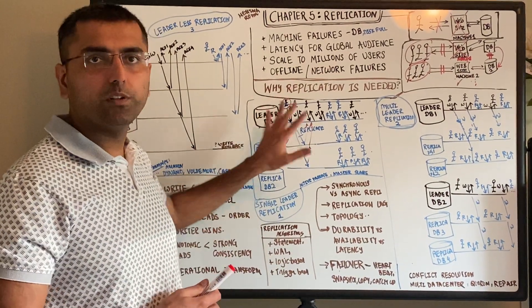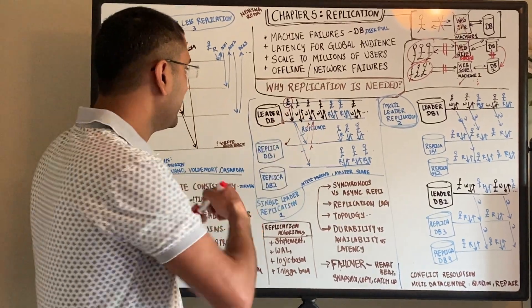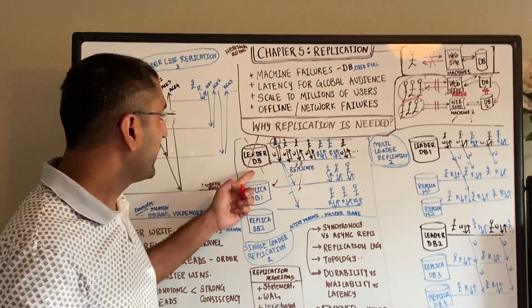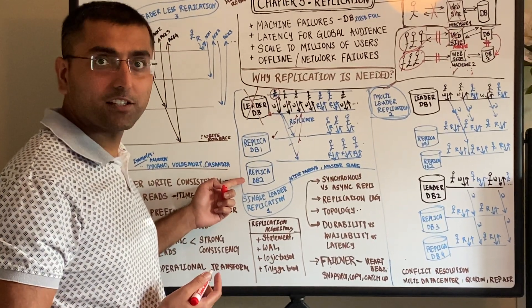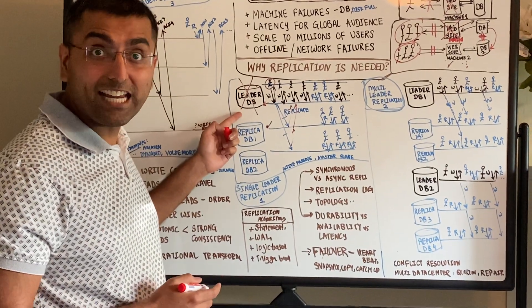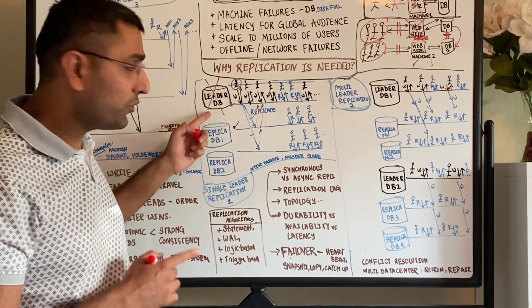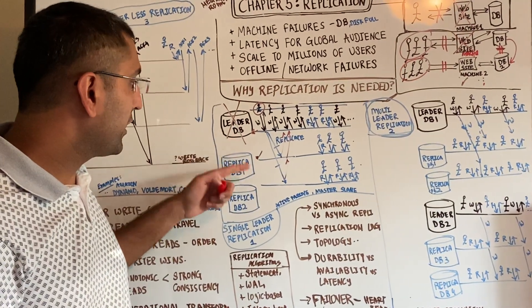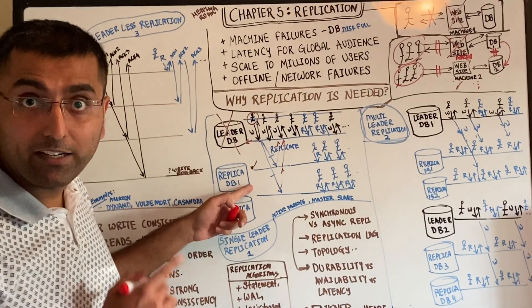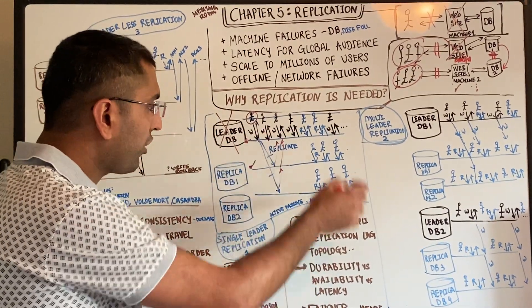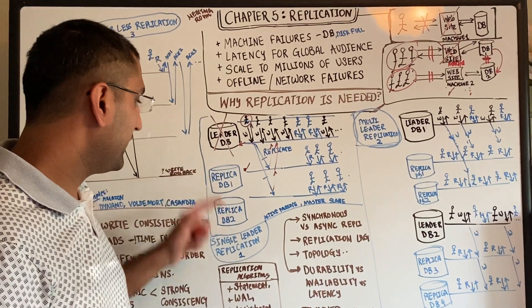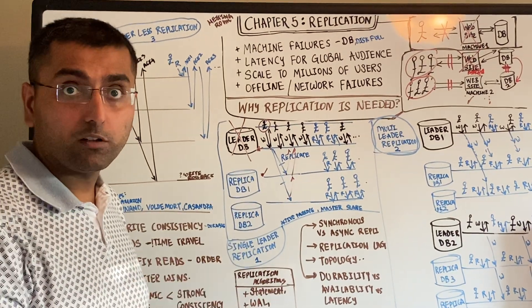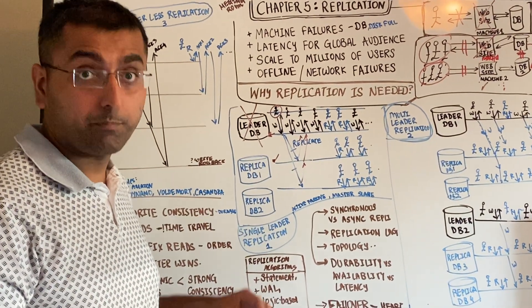The biggest issue with single leader replication is what happens when the leader goes down. You have to change the leader to one of the other replicas. First, you detect that the leader went down. Then you nominate a new leader. When you nominate a new leader, you snapshot all the data, copy it, and then wait for the replica to catch up. Leader failover has a huge impact — it involves a lot of manual process, though it can also be automated.